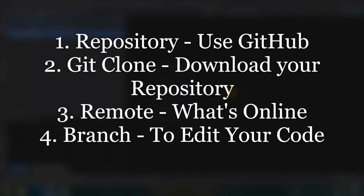Remote: remote is used to describe what's in your repository online. Branch: a repository can have many branches. Usually there is one main branch called main or master. When you want to make changes in your main branch, you should create a new branch and then merge it to the main branch, usually using a pull request.